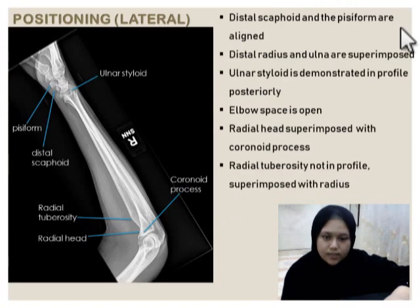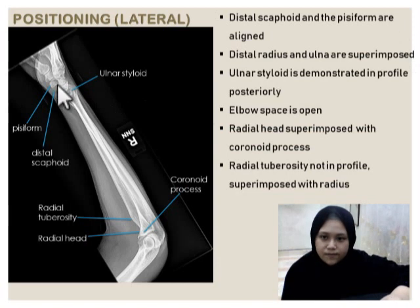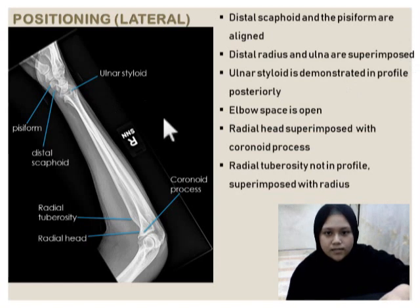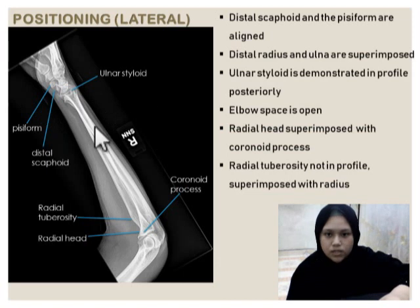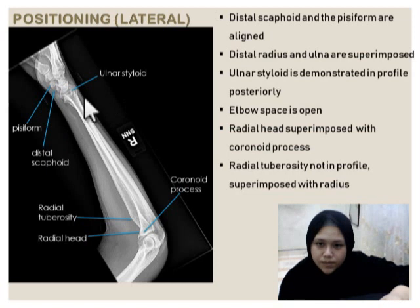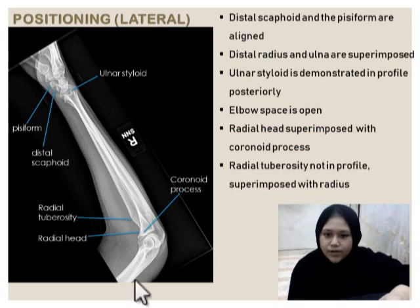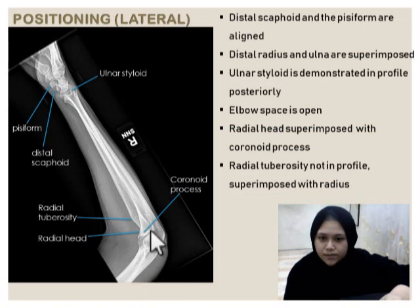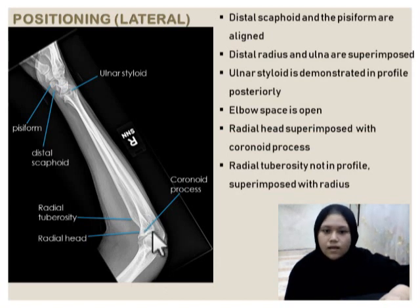Positioning for lateral: distal scaphoid and pisiform are aligned — this one is pisiform, this one is distal scaphoid. Distal radius and ulna are superimposed — this one is distal radius and ulna superimposed. Ulna styloid is demonstrated in profile posteriorly — this one is ulna styloid. Elbow joint is open. Radial head superimposed with coronoid process — this one is radial head and this one is coronoid process. Radial tuberosity not superimposed with radius.